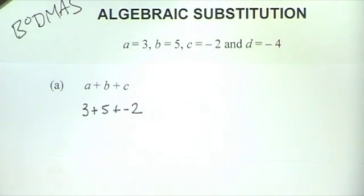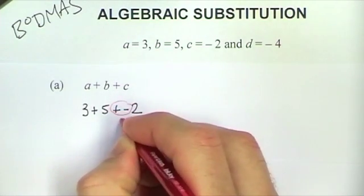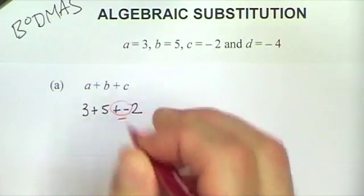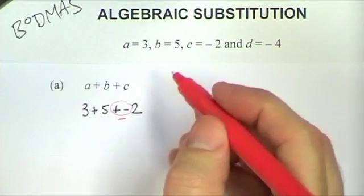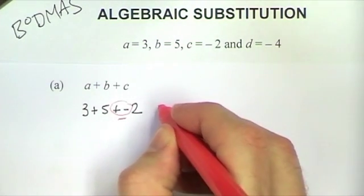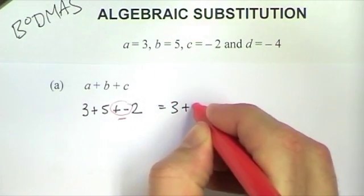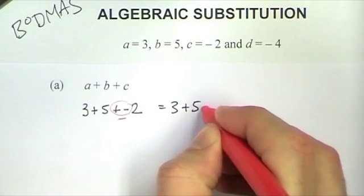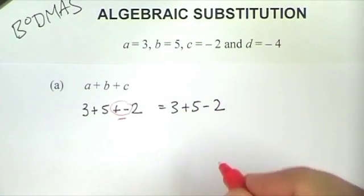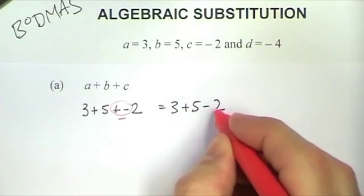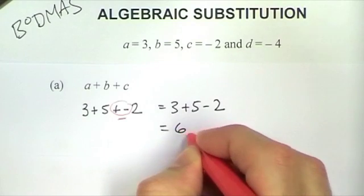Remembering that the plus and the minus overall forms a minus. So this expression is equivalent to 3 plus 5 minus 2. The 3 plus the 5 is 8, minus 2 gives me 6.